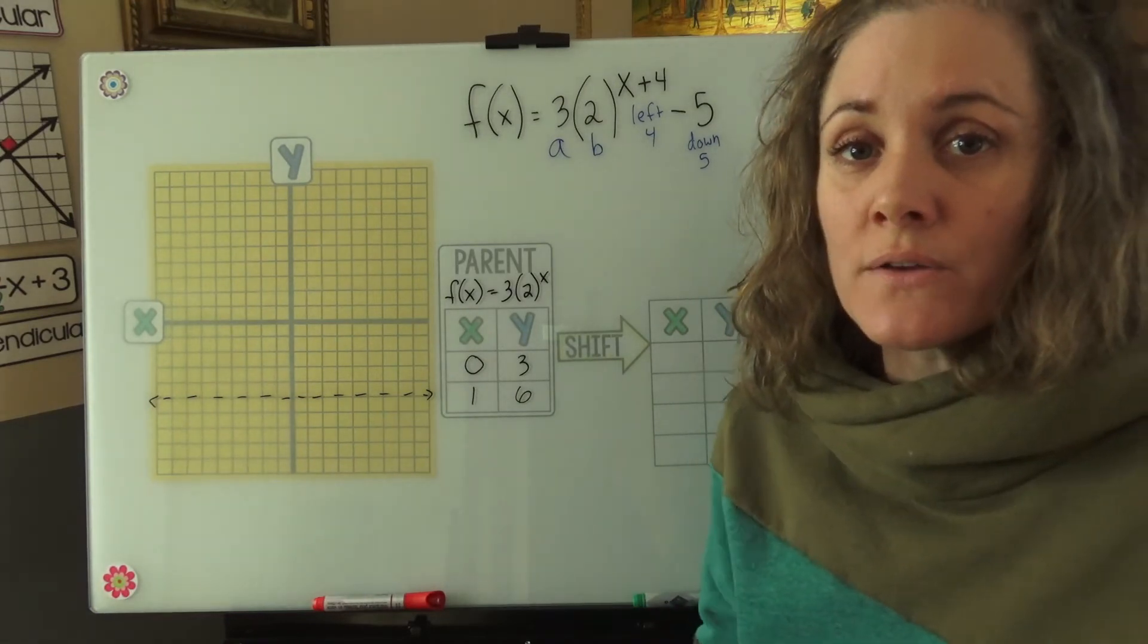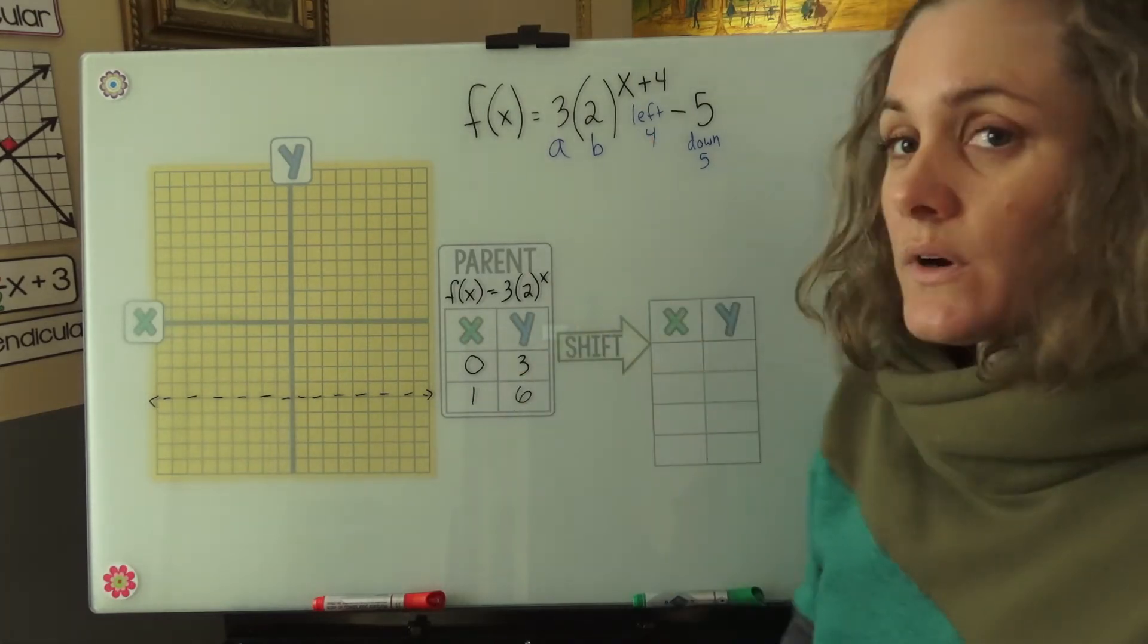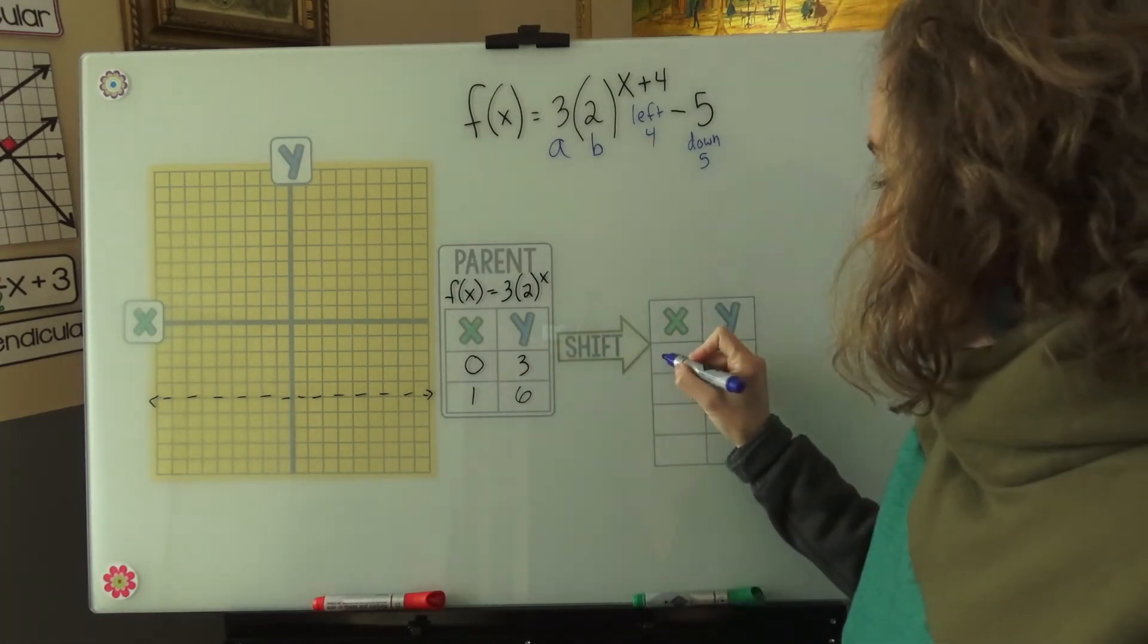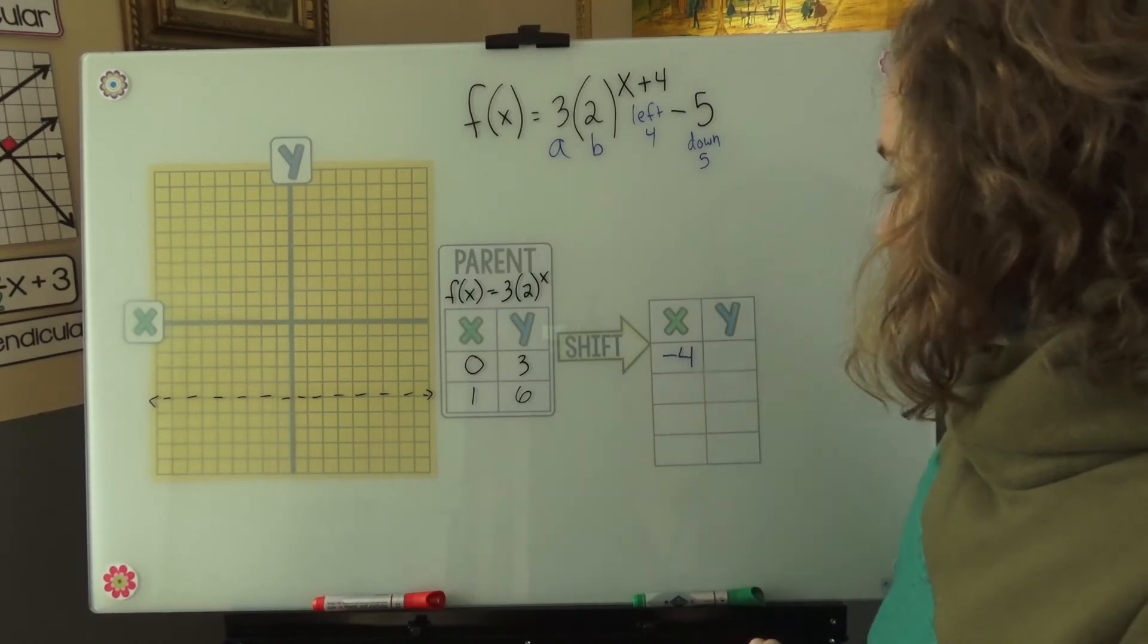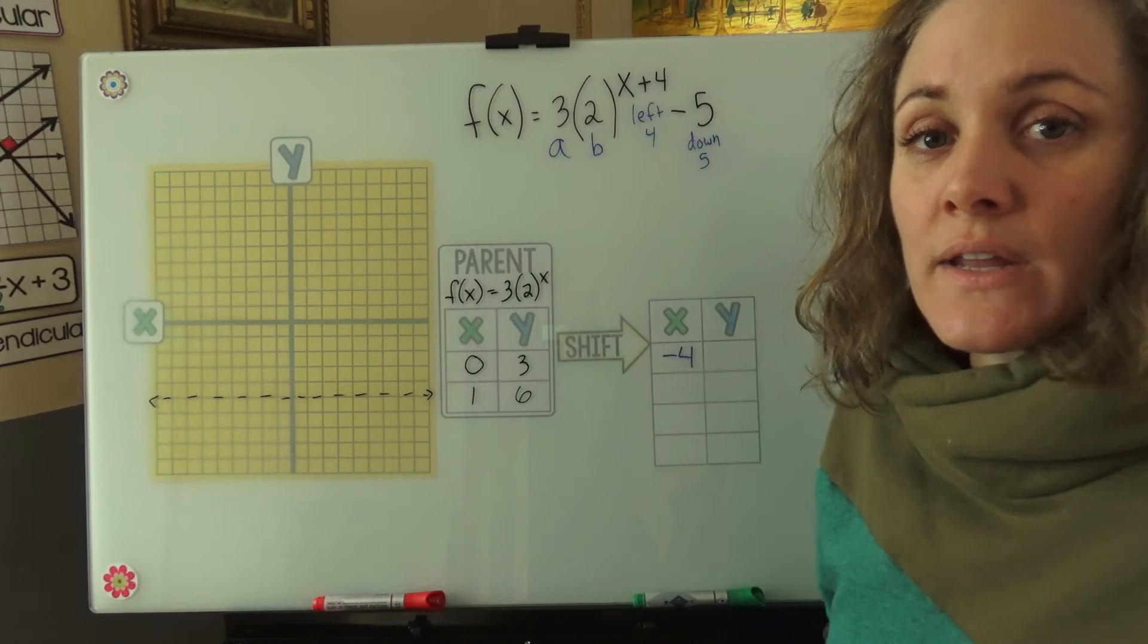0 minus 4, negative 4. 3 minus 5, negative 2.